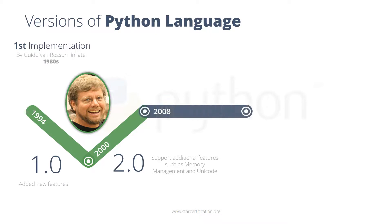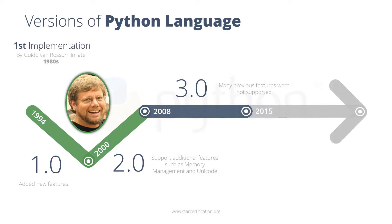In 2008, the Python 3.0 version was released, but it had major drawbacks — it did not support many of the features of the previous versions. It had its own new features and was put forward after several long-term testing and cross-examinations. In 2015, Python 3.6.1 was released, which was the first maintenance release of Python 3.6.